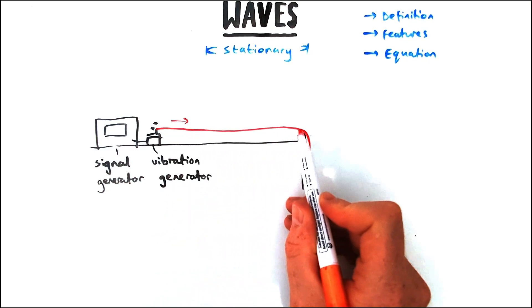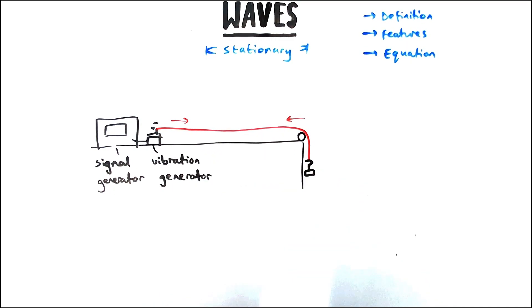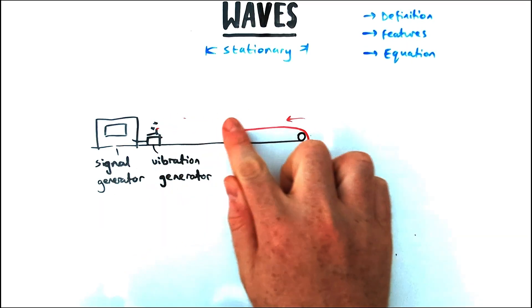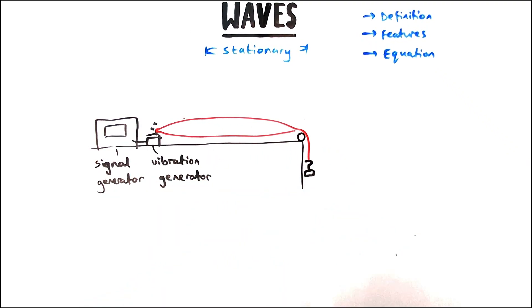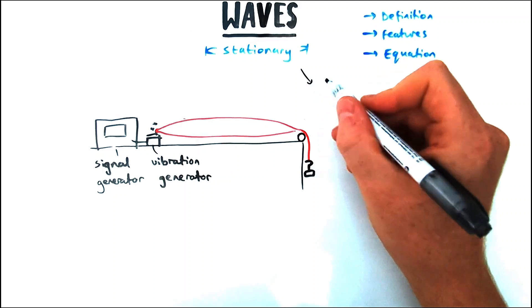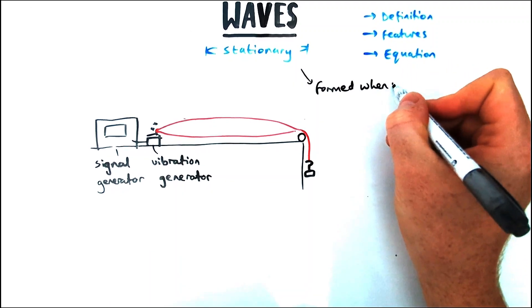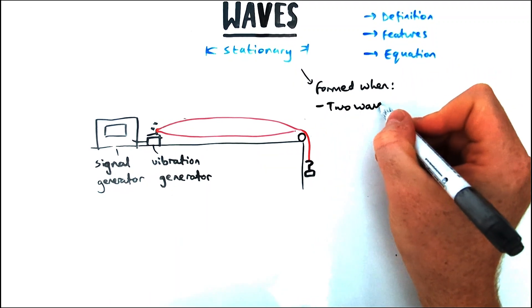You might have seen this practical done before: a piece of string with a vibration generator and a signal generator. The vibration generator generates these waves that travel to one end and reflect back, and they form shapes like this.